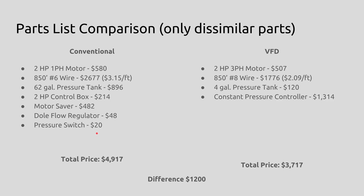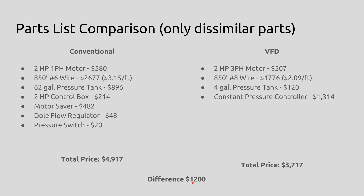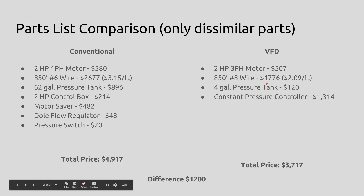The pressure switch is a part that's not in a VFD system as well. So the total difference in parts is $1,200. The total price is $4,917 versus $3,717 — this is only the dissimilar parts. So the difference is in favor of the VFD in this situation by $1,200. That wire definitely added up quite a bit here: $2,600 versus $1,700.